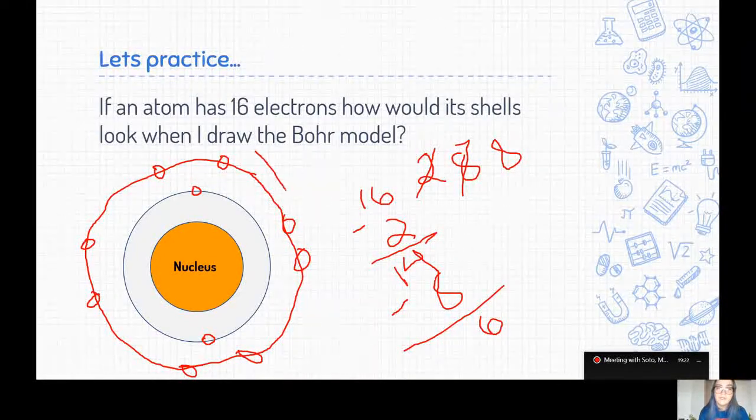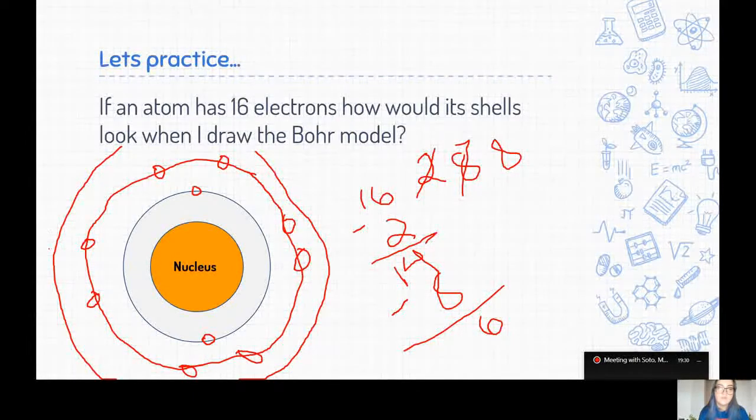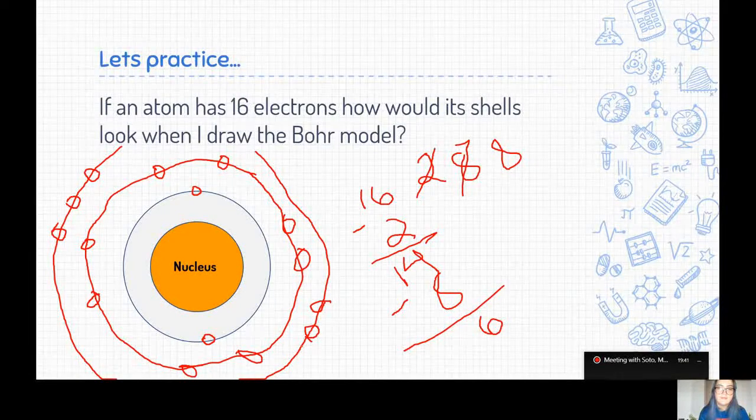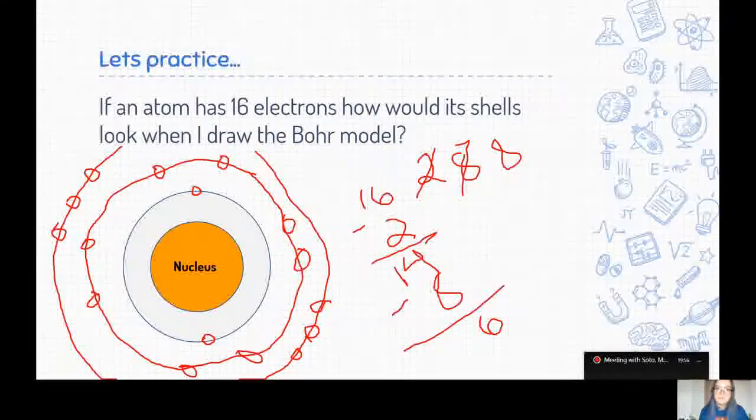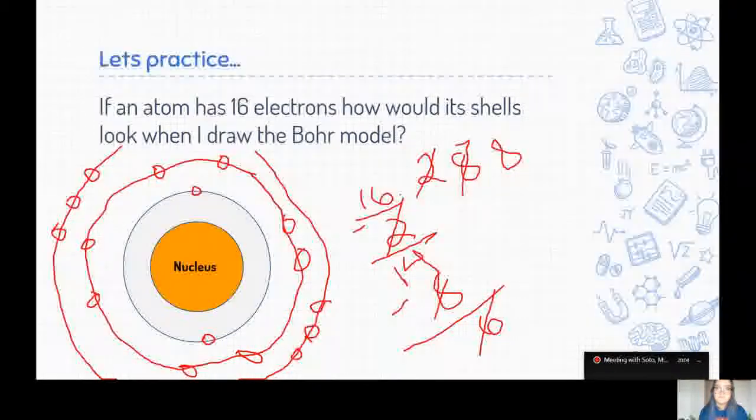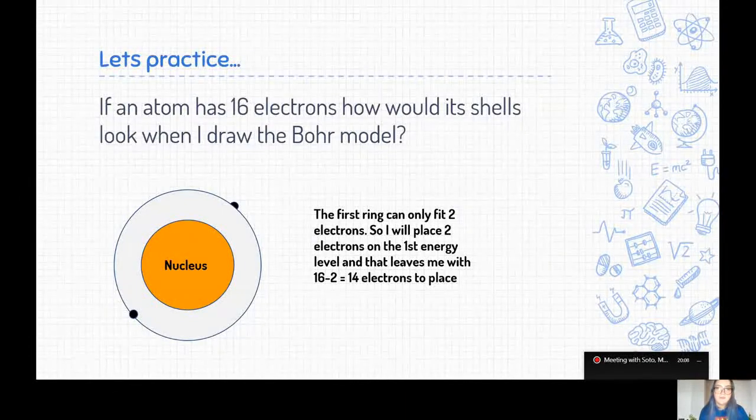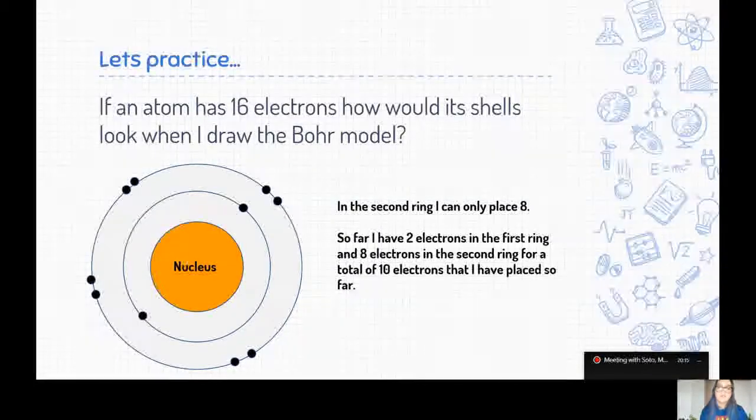So on our last shell, on our third shell, we're going to need six electrons. So on the third shell, we would draw six electrons. One, two, three, four, five, six. And this is just an example. Don't worry about where the circles go. Those are just your electrons. As long as you have the right amount in the right rings, you're good. And so now you drew two on the first ring, eight on the second ring, and six on the third ring for a total of 16 electrons. So like I said, there we go. The first two, the second eight gets a total of 10, and then the last ring should be the six.